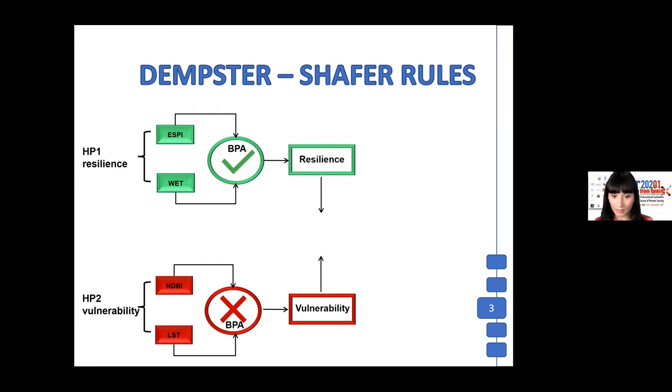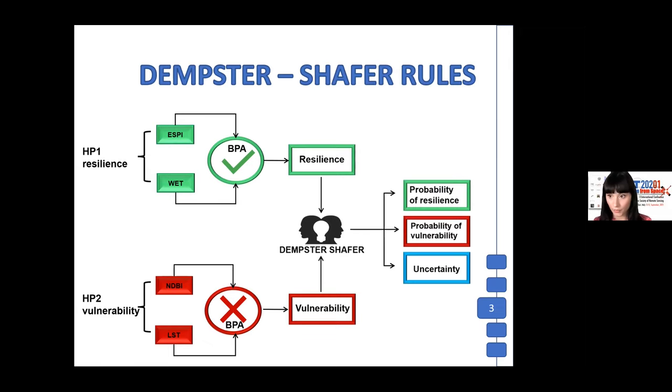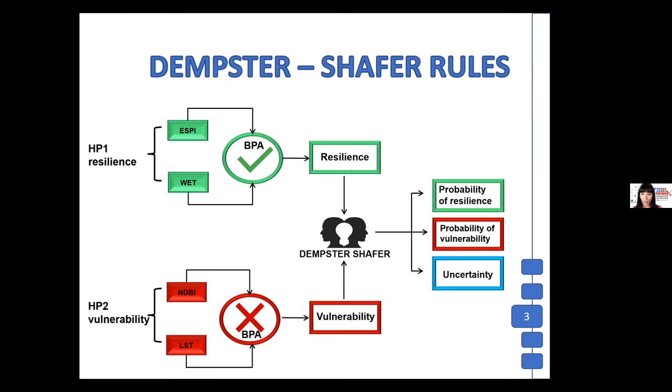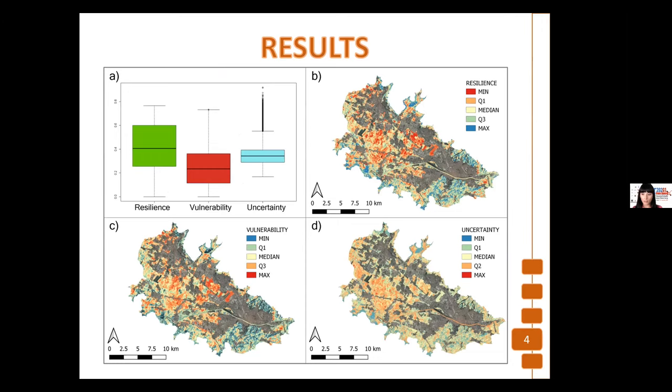These results were aggregated through the Dempster-Shafer rules to obtain three different types of raster maps: the probability of resilience, the probability of vulnerability, and the uncertainty. In this slide, you can see our results, and the box shows the distribution of our probabilities, and in these other figures, we have the spatialization of the results.